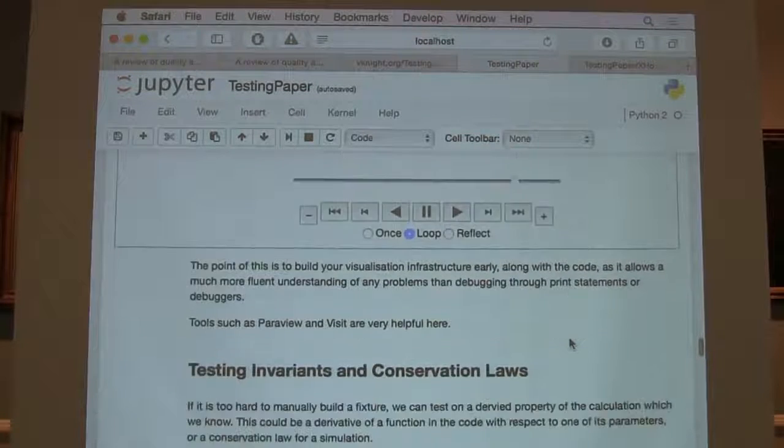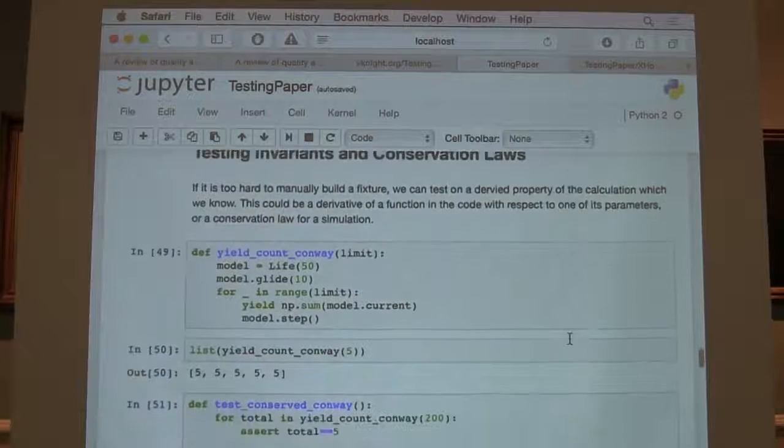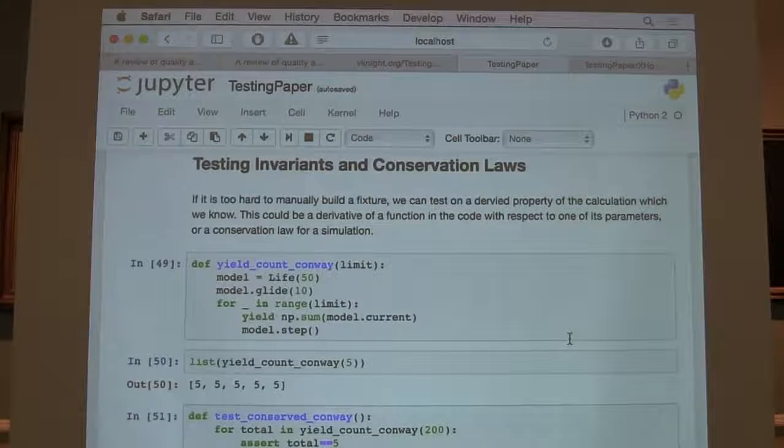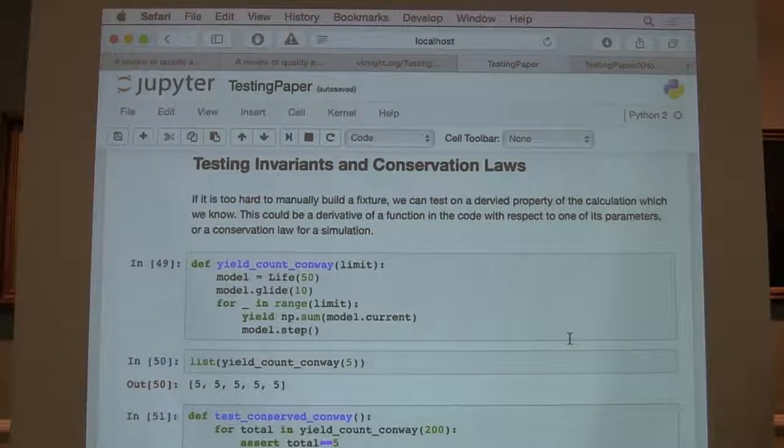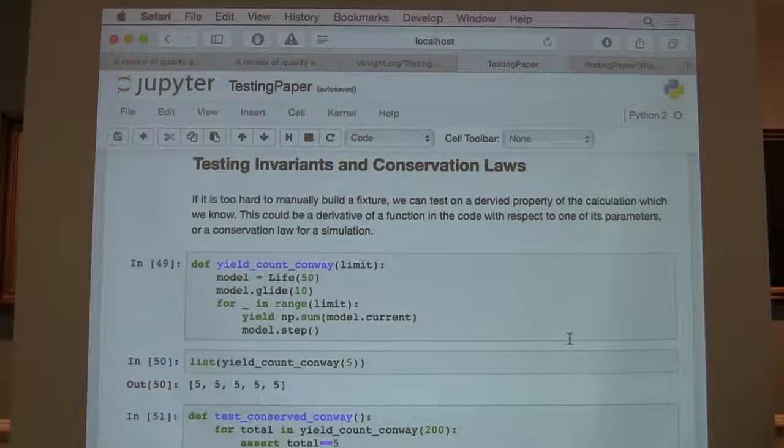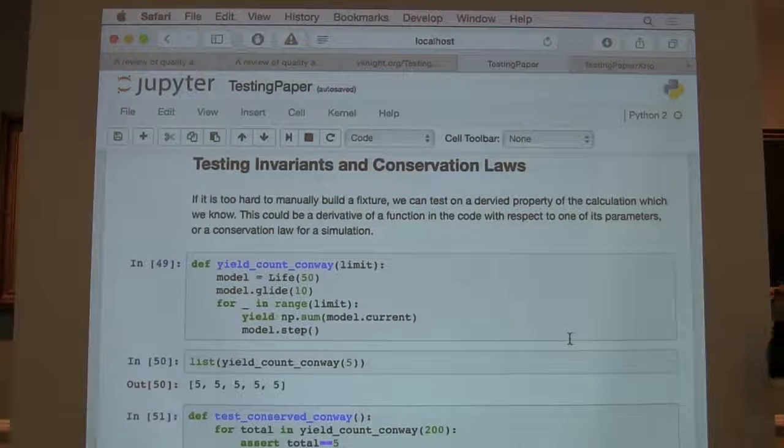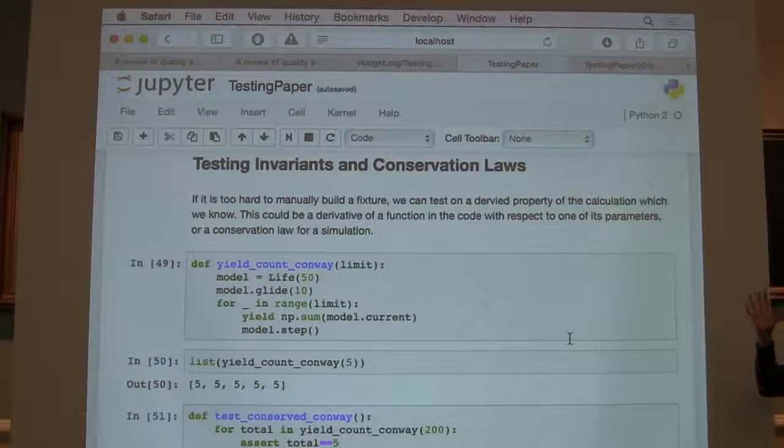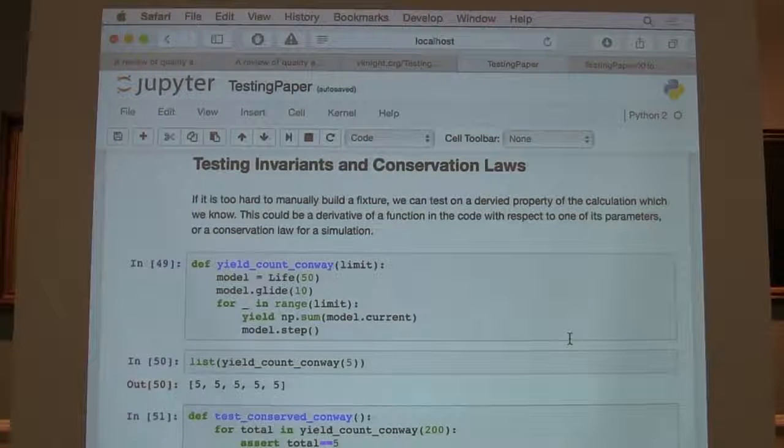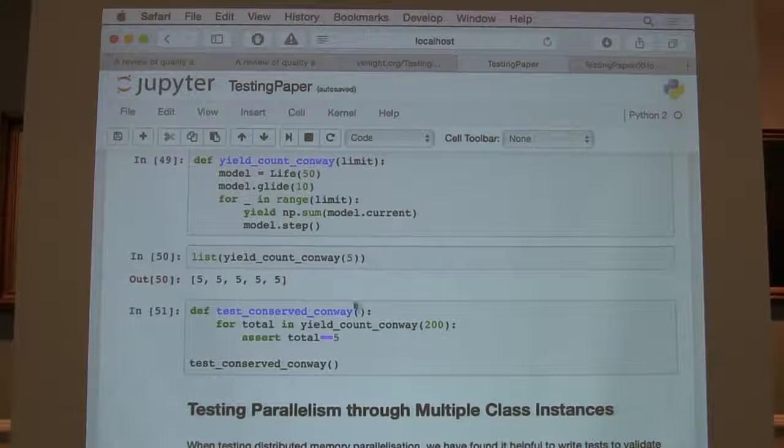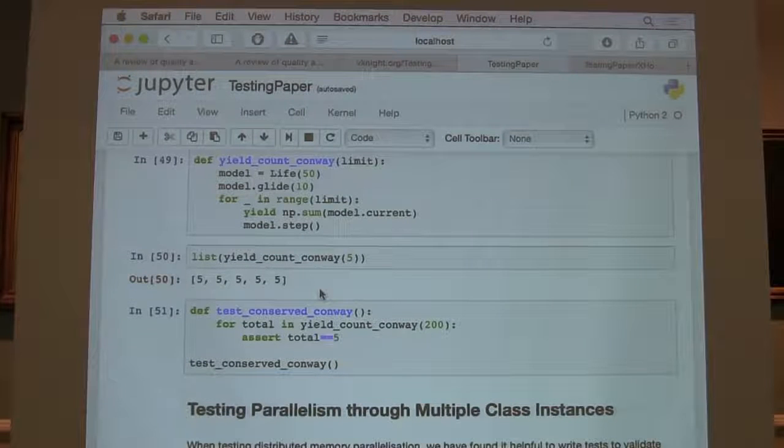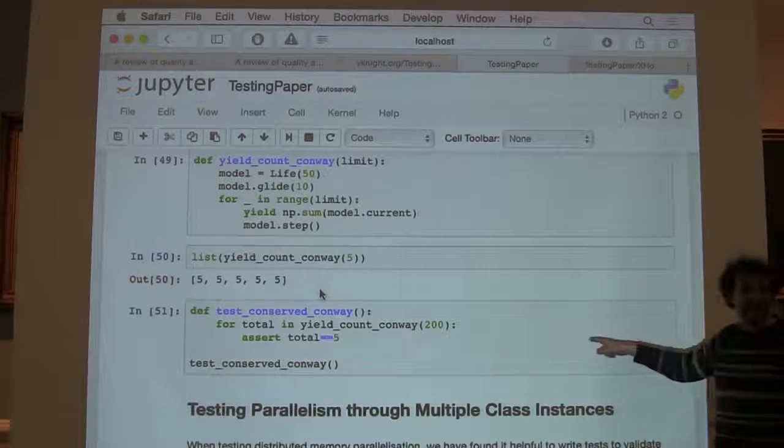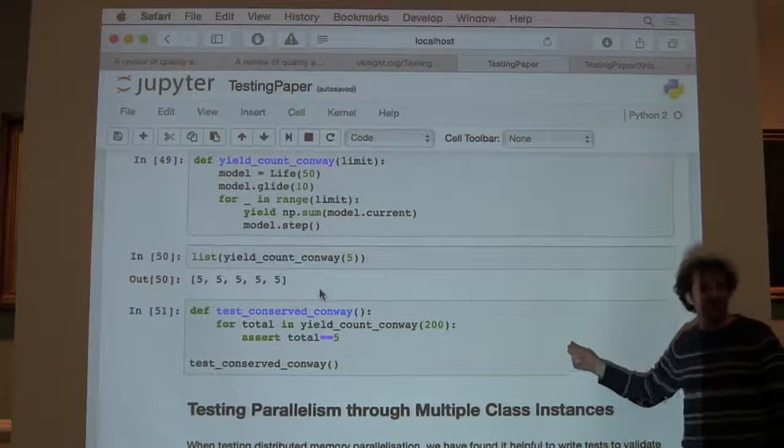Another thing from the Game of Life example is, sometimes it's really hard to tell what the answer is supposed to be, because the answer is quite complicated, but what we can test here is the conservation law. In fact, the glider's always got five live cells. Here, this generator yields the long series of numbers of the current set of active cells, and we're testing, in this unit test, the conservation law. That's an interesting testing approach for scientific codes, not so much for other kinds of things.